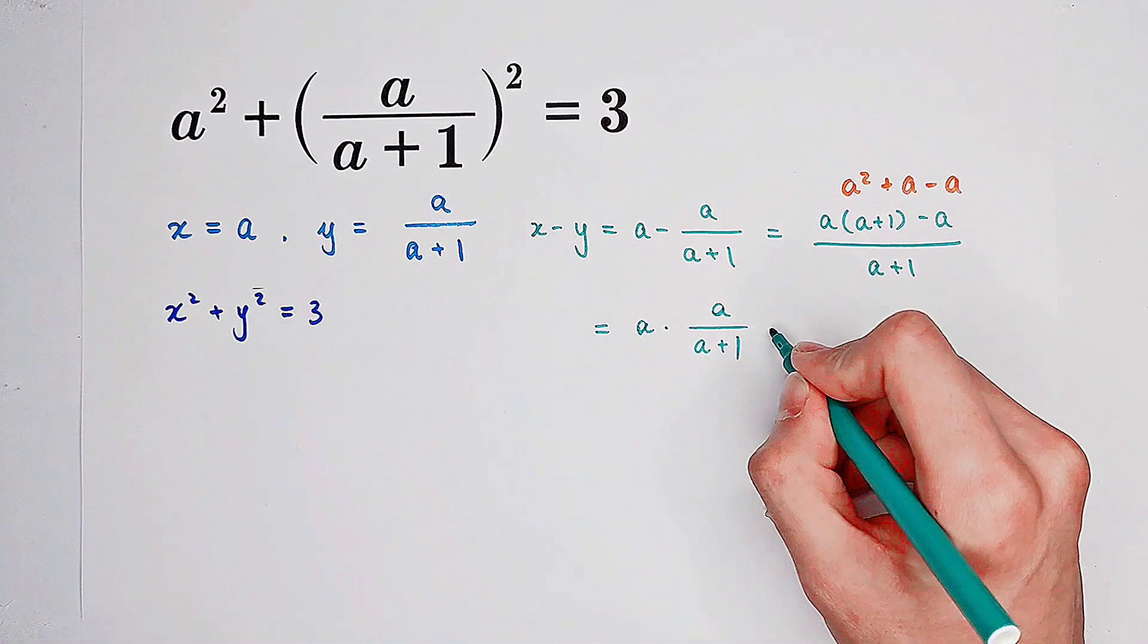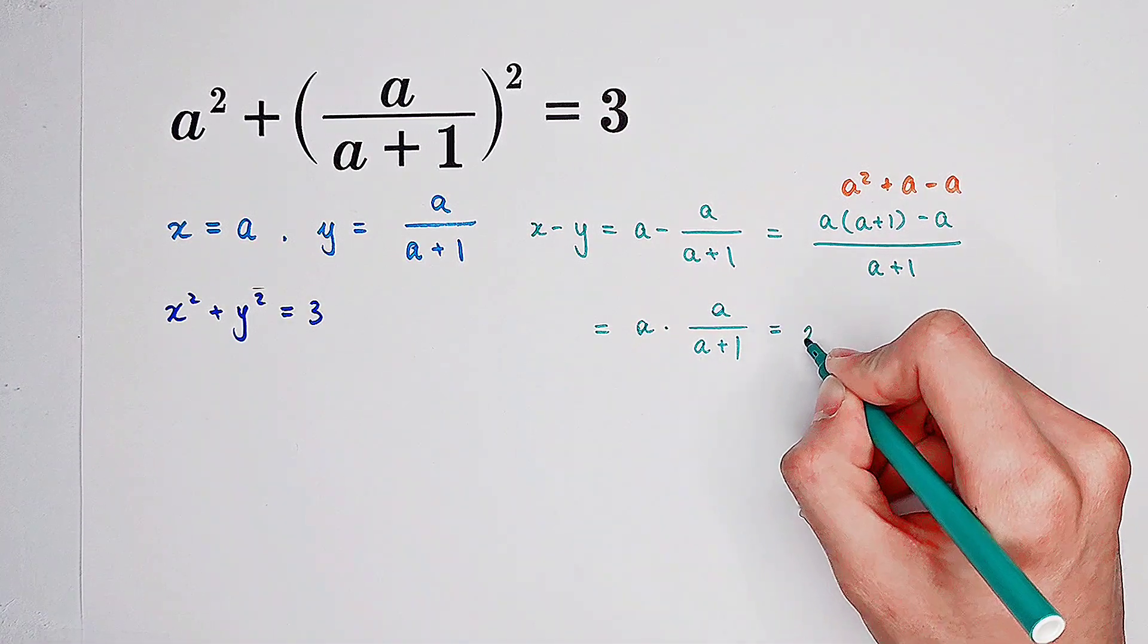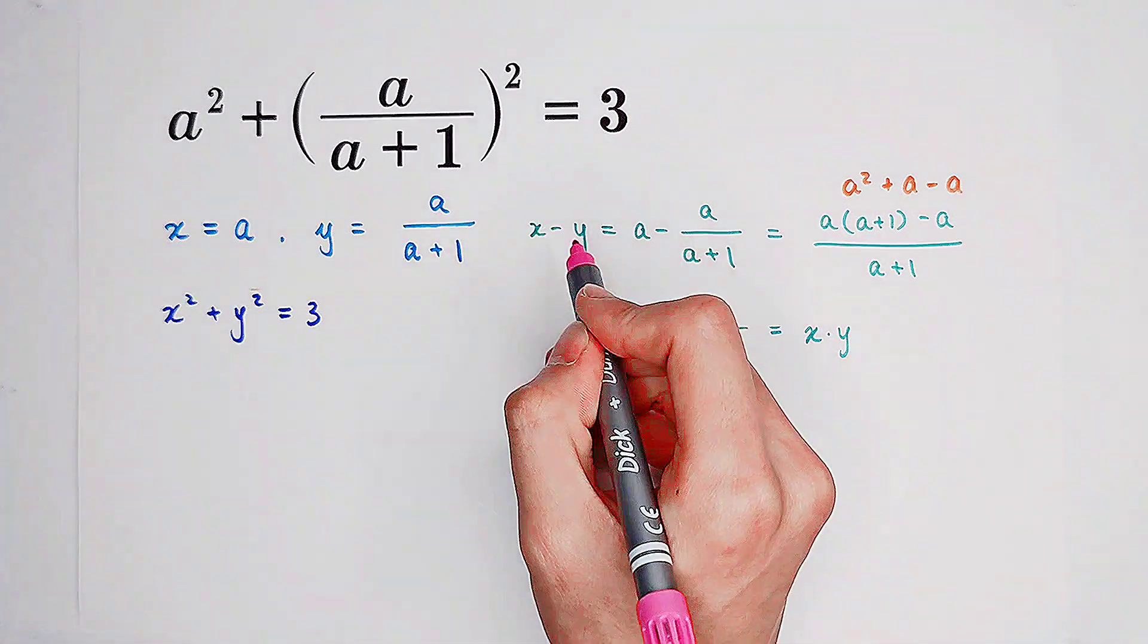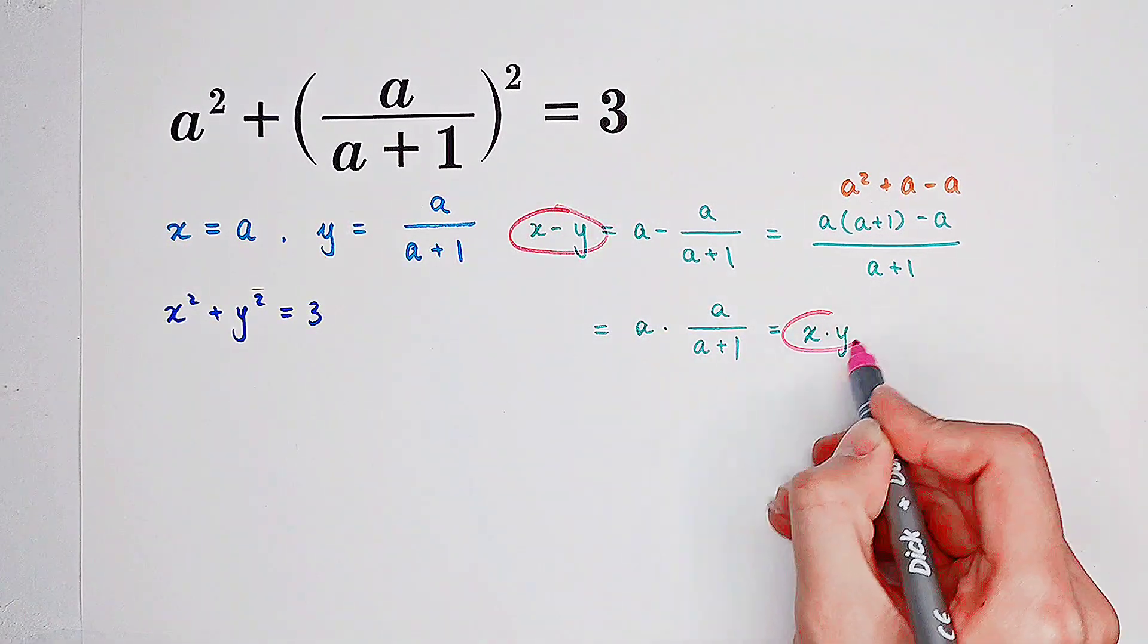So now we get that this one is just x times y. So do you see? x minus y equals x times y.